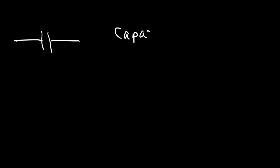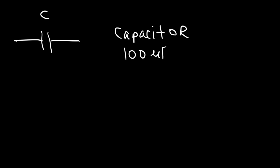The next symbol is a capacitor. This is just a regular capacitor — nothing special about it. The symbol for that is C, and it's measured in farads. Sometimes you may have a 100 microfarad capacitor.